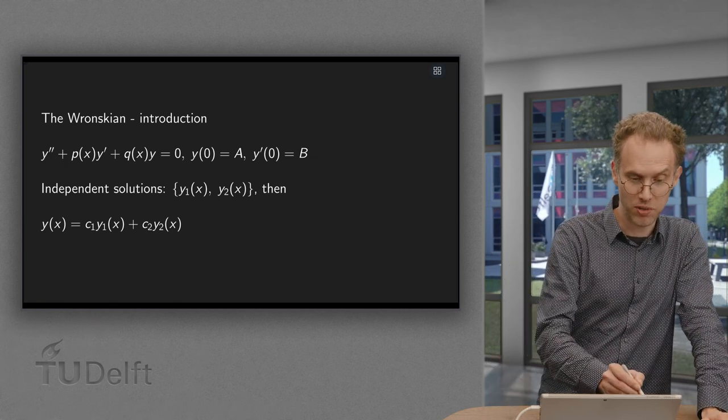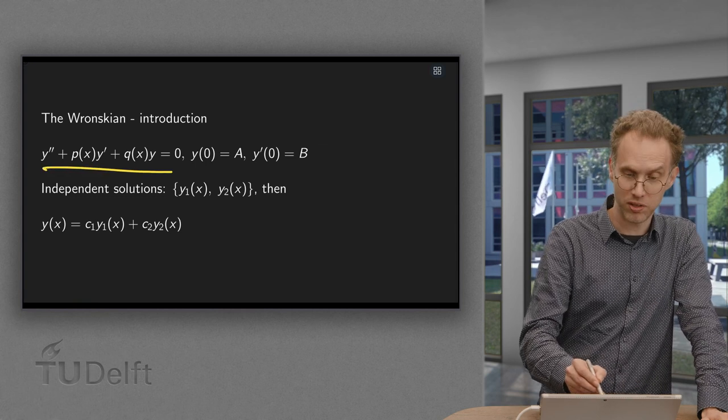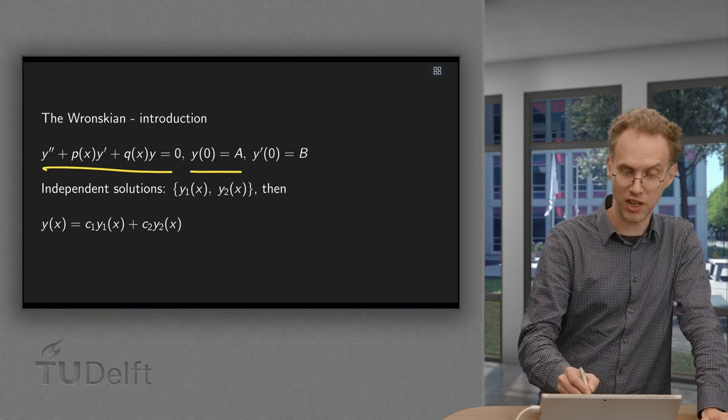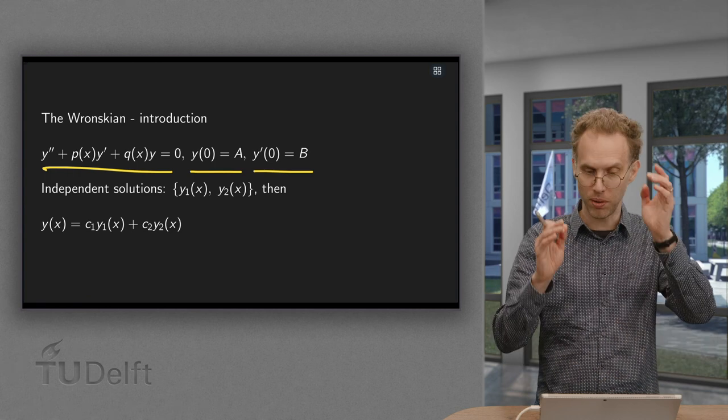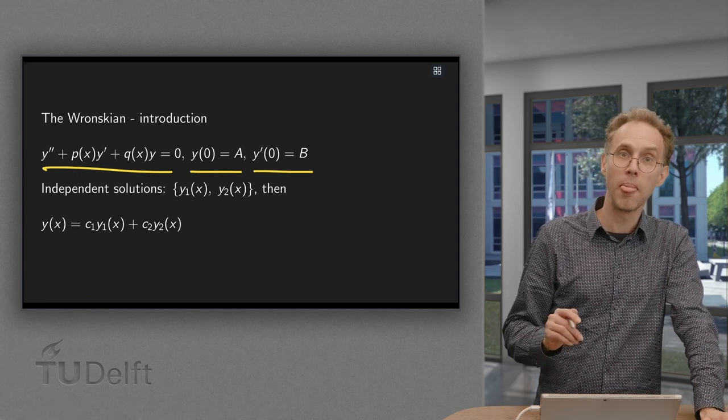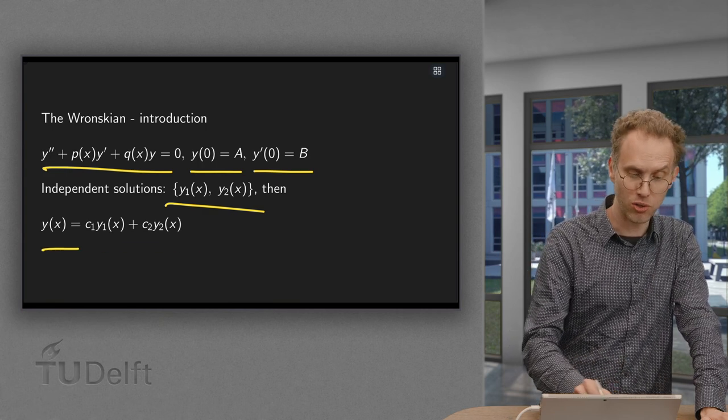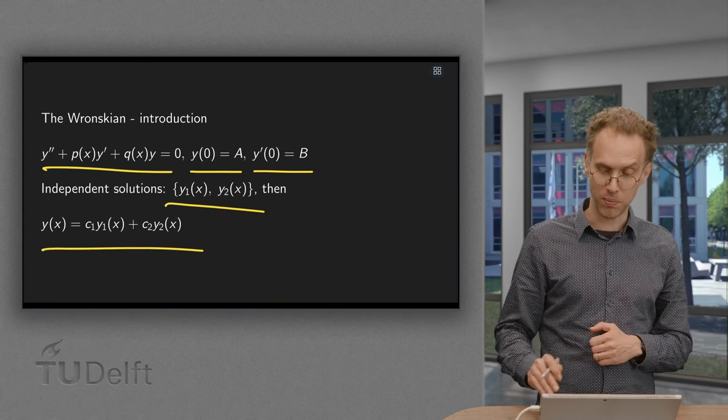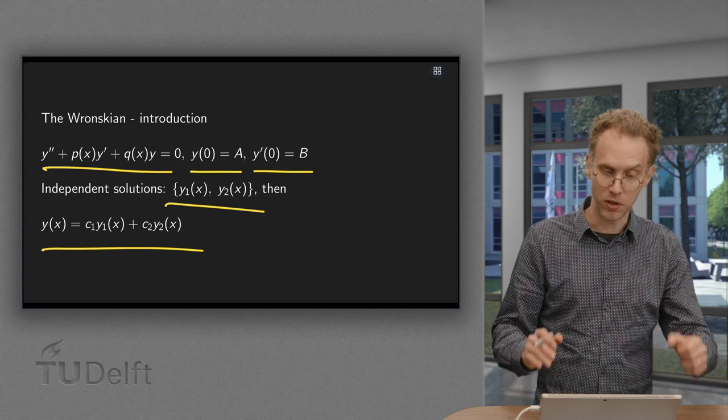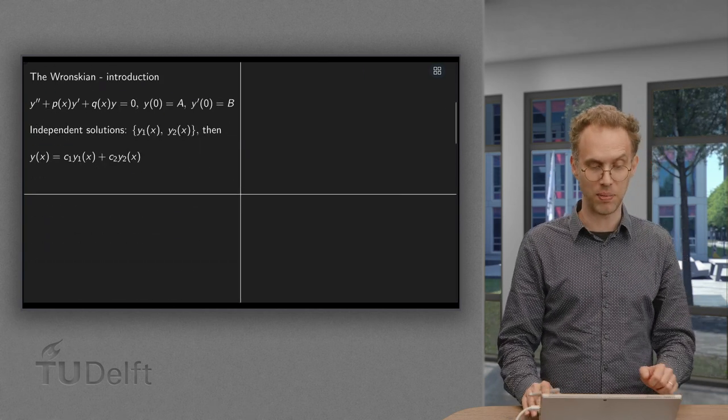So, what's the idea? We have some second-order problem with conditions y(0) = A, y'(0) = B, some numbers, don't care which ones. Then if we have two independent solutions, y1 and y2, then our total solution equals c1 times y1 plus c2 times y2. But when do we have independent solutions?